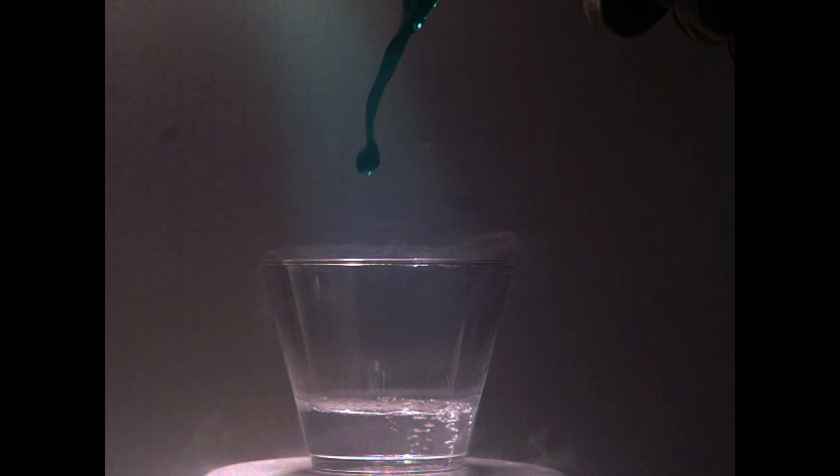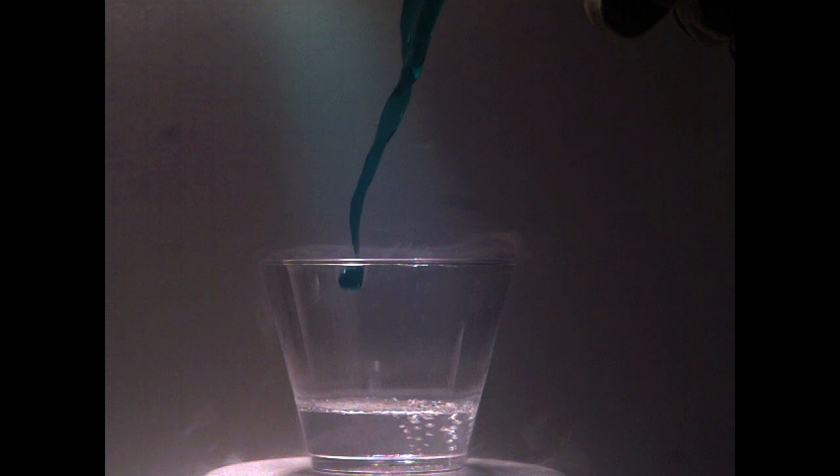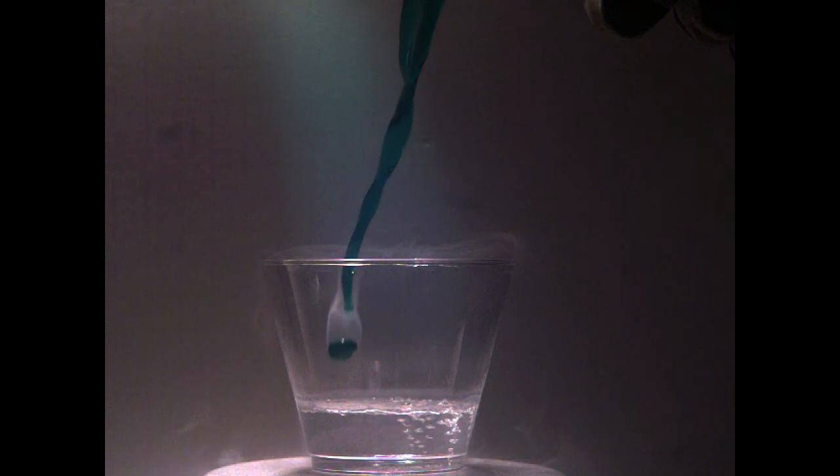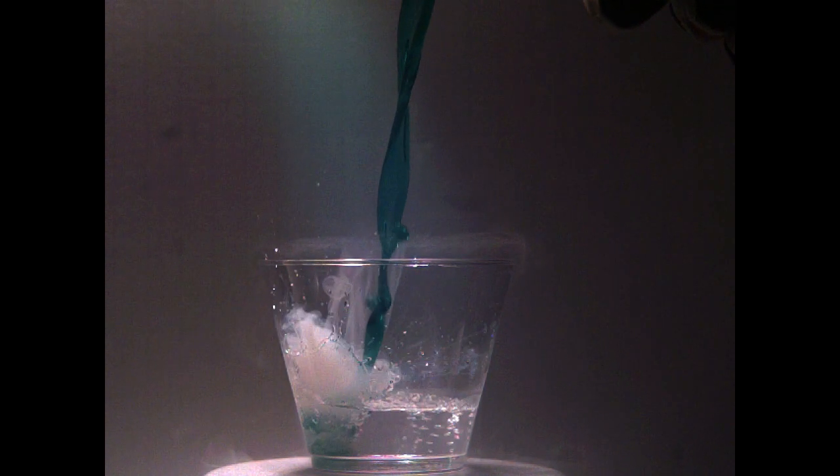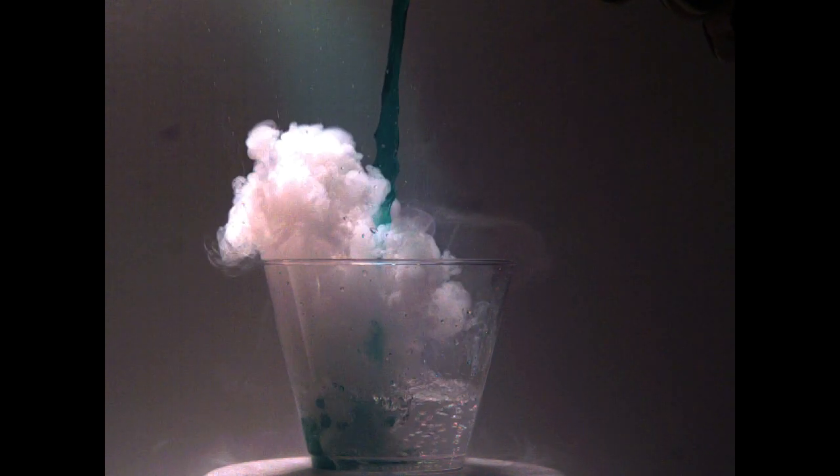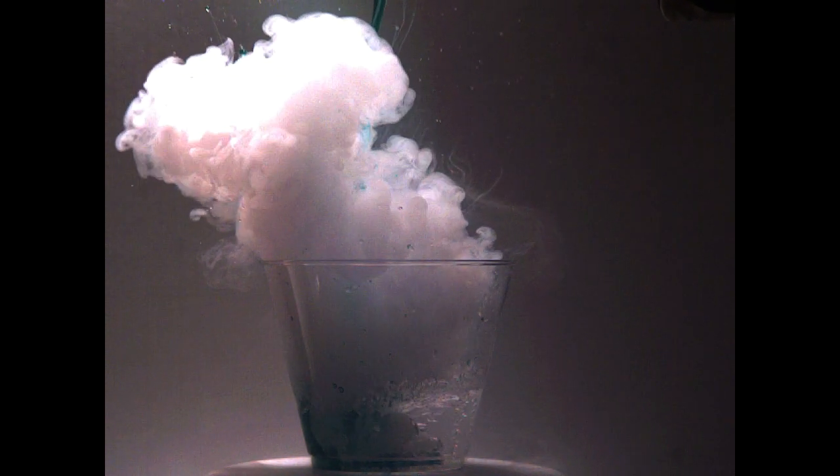Now we're going to try this experiment the other way around. We'll pour some hot liquid water, which is colored green, into liquid nitrogen, which is found in the bottom of this cup. Oh wow, in this case the formation of a cloud is rapid and violent.